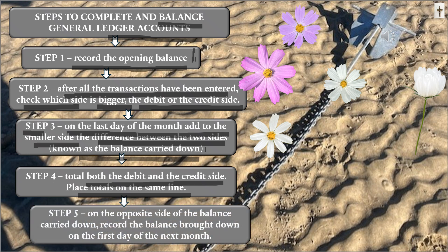Step five: on the opposite side to the balance carried down, you're going to have the balance brought down on the first day of the next month. This is just a method that was introduced by manual bookkeepers, perhaps so there's consistency in how accounts were balanced.